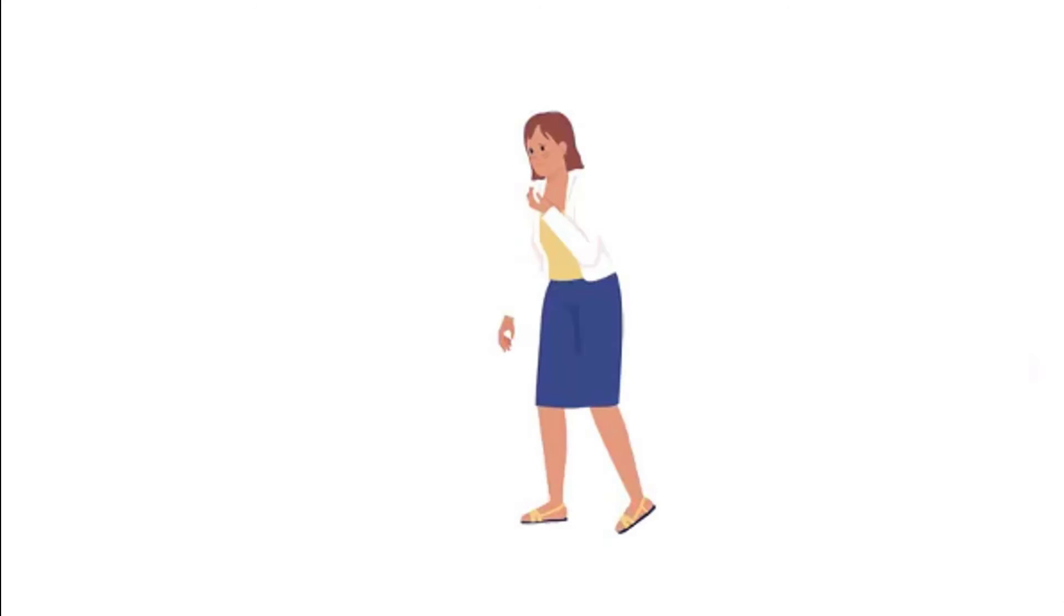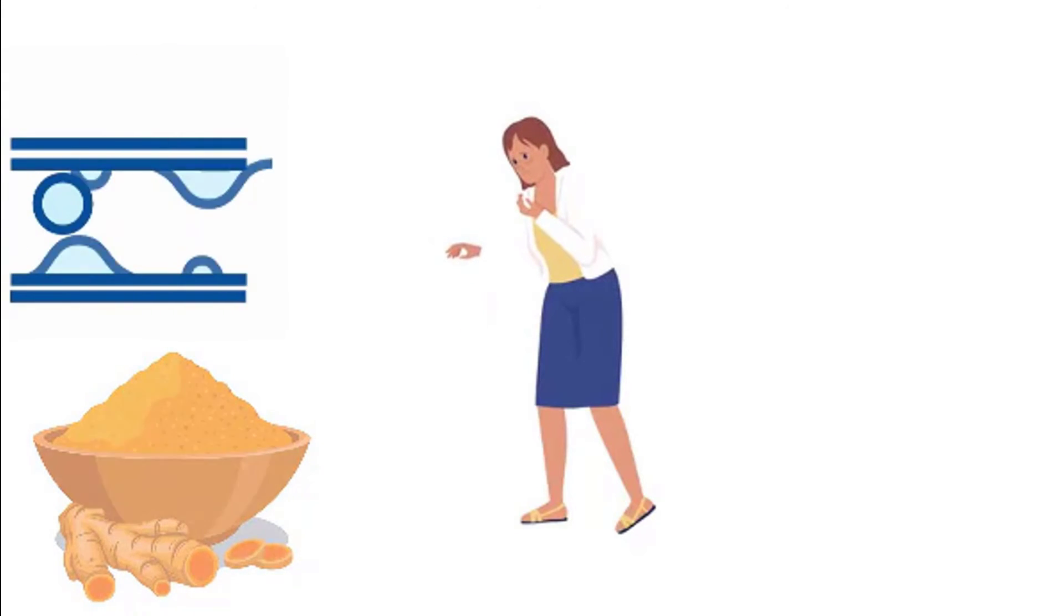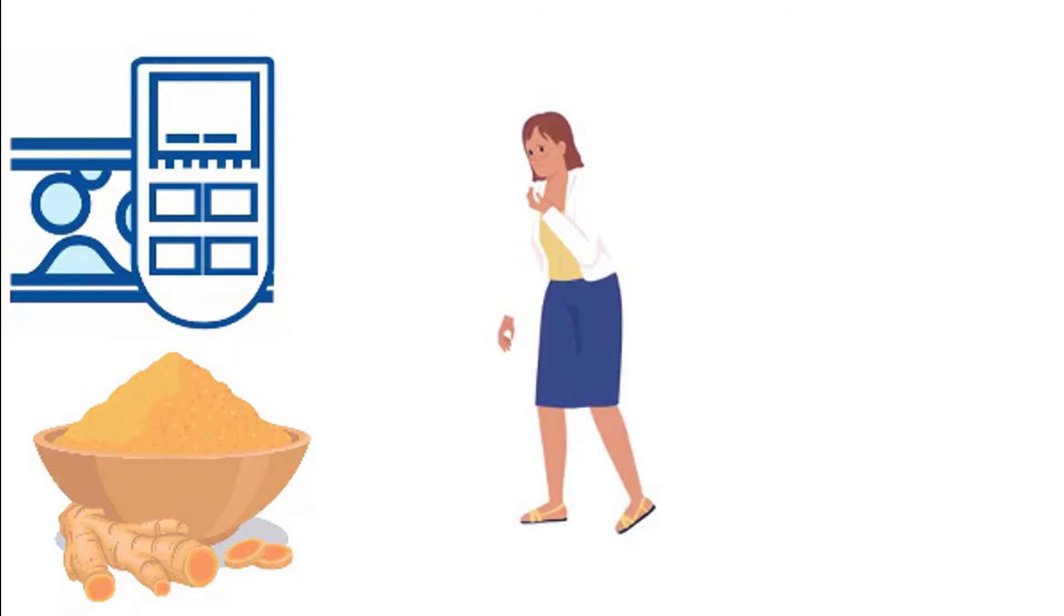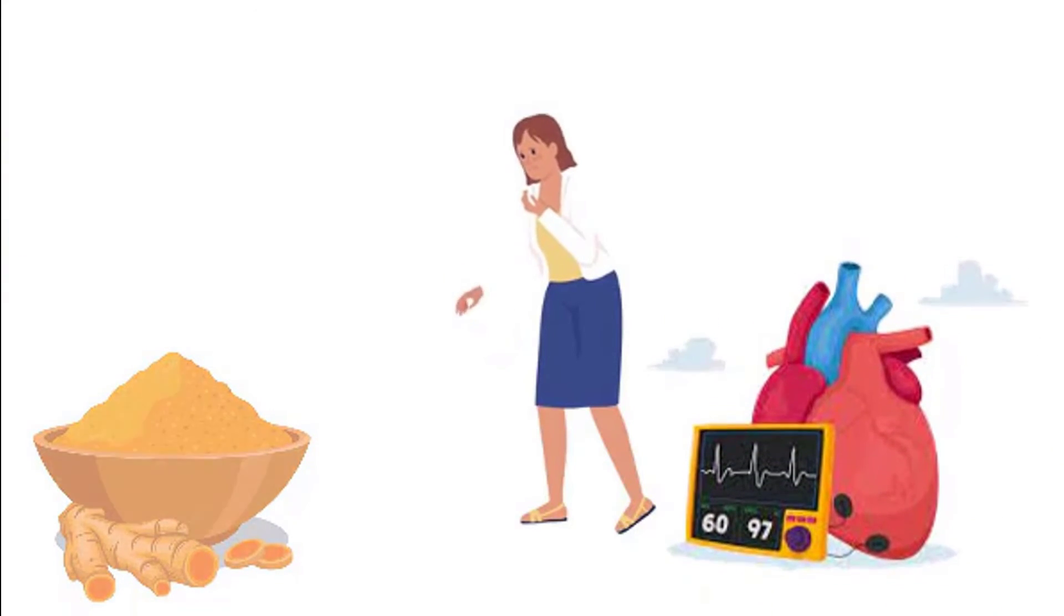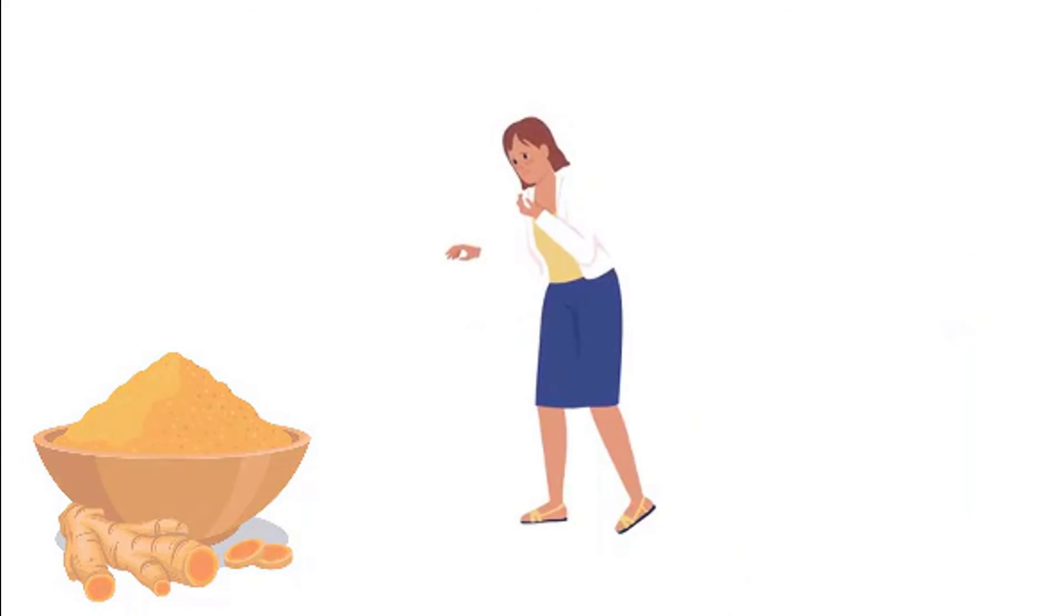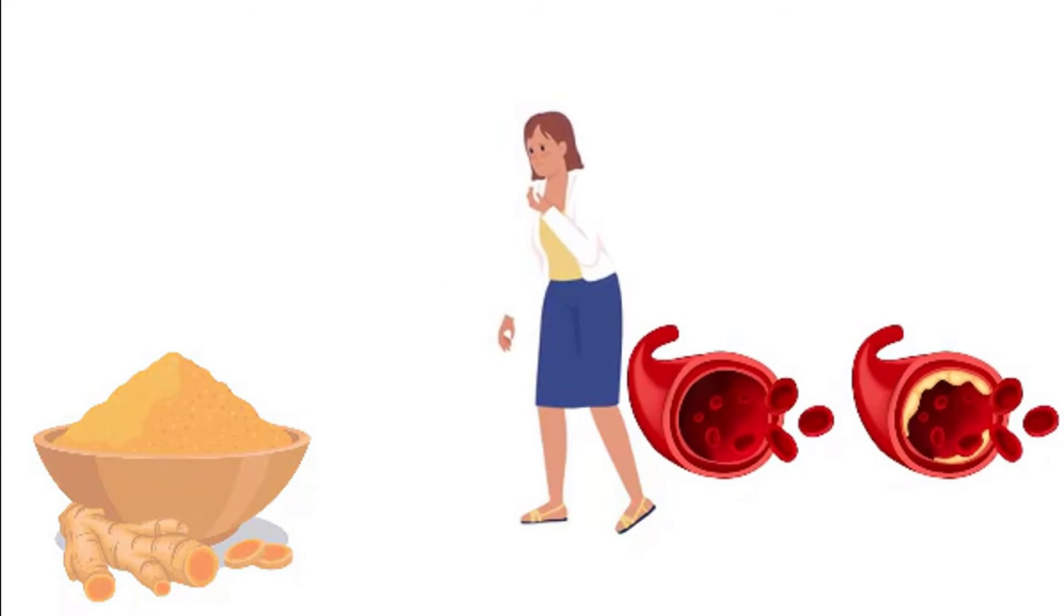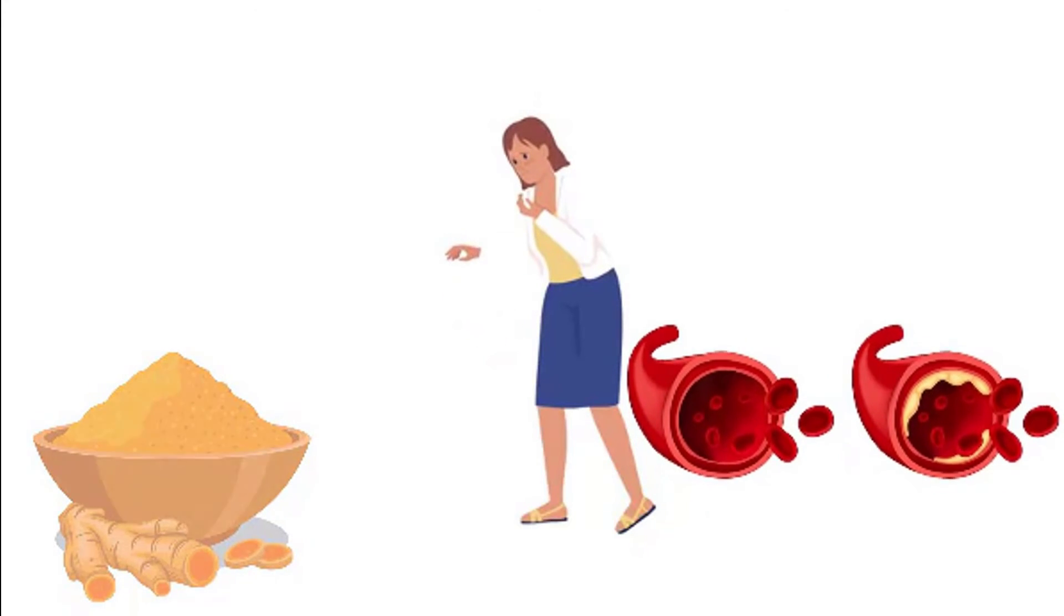Reduce risk of stroke and heart attack. Since turmeric, as explained, lowers cholesterol levels, has an antioxidant effect and thus reduces the dangerous oxidation of cholesterol, regulates blood lipid levels, helps keep blood sugar in check, thins blood, and protects blood vessels, all these factors can decrease the risk of heart attack.